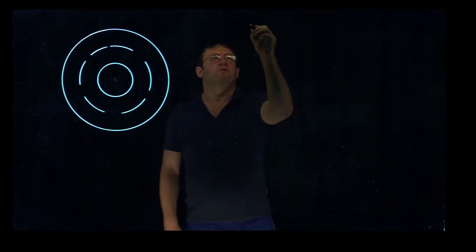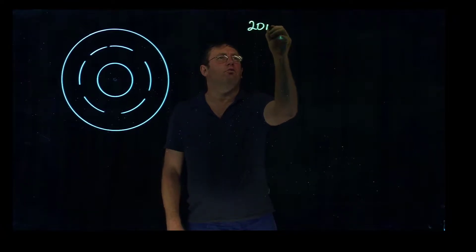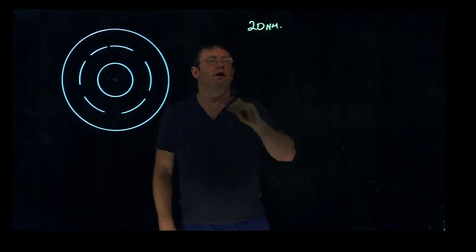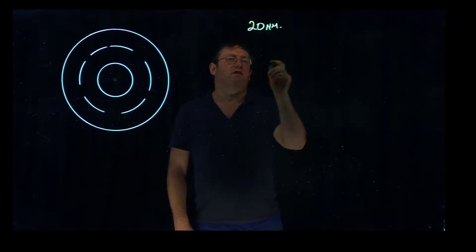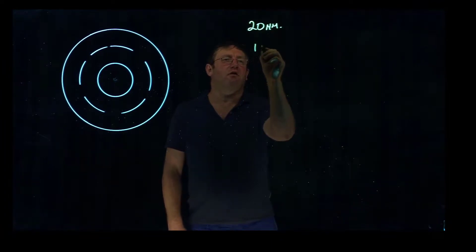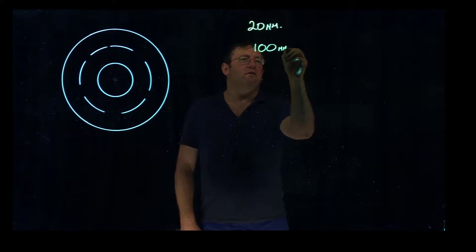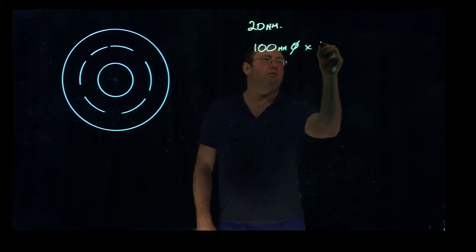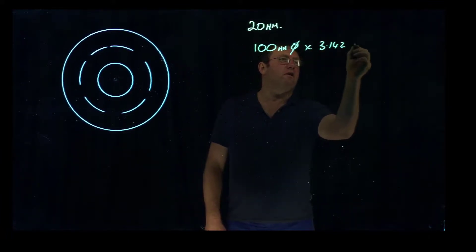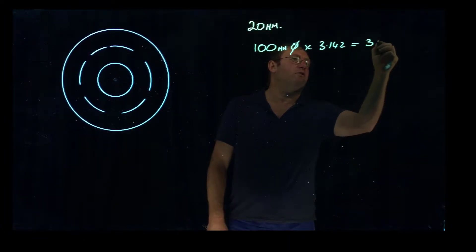As an example, I'm going to make a ring, 20mm thick steel. I'm going to work out a cut size for 100mm as a diameter, times it by pi, gives me a cut size of 314.2mm.